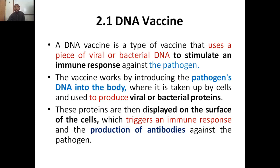The immune system recognizes foreign bodies. For example, in a COVID-19 infection, the virus spreading inside the body is seen as a foreign agent and the immune system goes to kill it. But sometimes a pathogen or virus is so strong that the immune system alone cannot fight it — that is when you need a vaccine. A DNA vaccine is a type of vaccine that uses a piece of viral or bacterial DNA to stimulate the immune response against the pathogen, making killing faster and more specific.